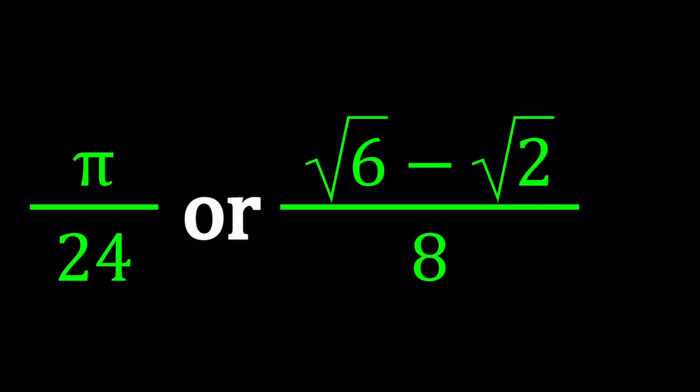Hi everyone. In this video, we're going to be comparing two numbers, two very irrational numbers. We have π/24 and √6 - √2 all over 8.